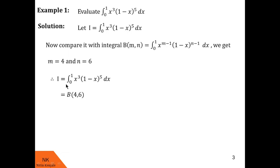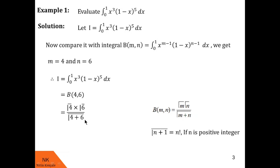We can simplify beta of 4, 6 using the relation between beta and gamma functions. So beta of 4, 6 can be written as gamma of 4 into gamma of 6 upon gamma of 10. We then use the property that if n is a positive integer, gamma of n plus 1 equals n factorial. Therefore gamma of 4 is 3 factorial, gamma of 6 is 5 factorial, and gamma of 10 is 9 factorial. One can easily find the numerical value using a calculator.